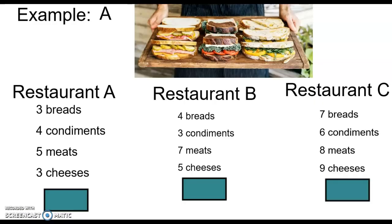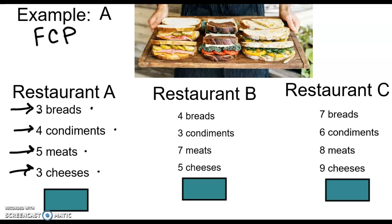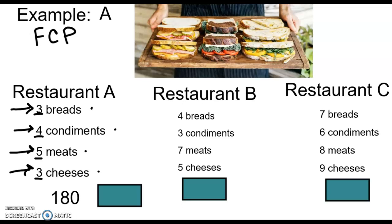Here's an example. At a restaurant that makes sandwiches with three different breads, four condiments, five meats, and three cheeses, rather than doing a tree diagram or table, we use the fundamental counting principle and just multiply: three times four times five times three equals 180 different sandwich combinations. Restaurant B has four breads, three condiments, seven meats, five cheeses — four times three times seven times five equals 420 different sandwich combinations.